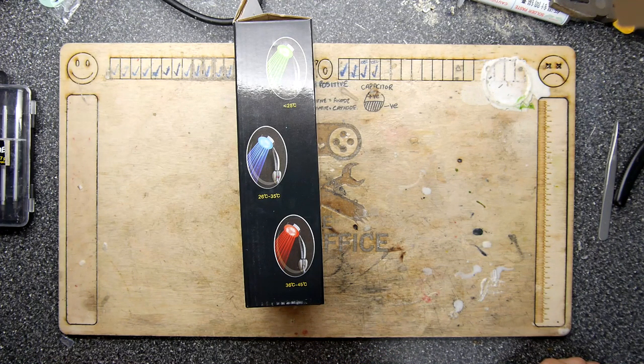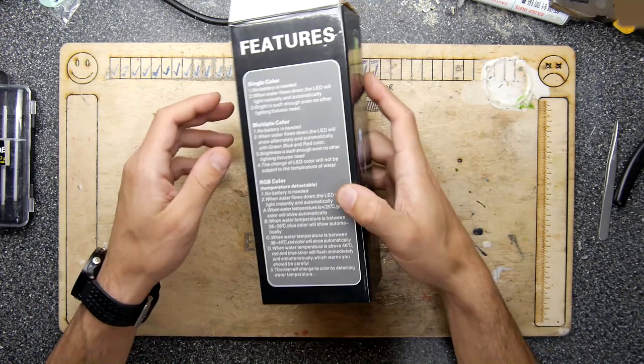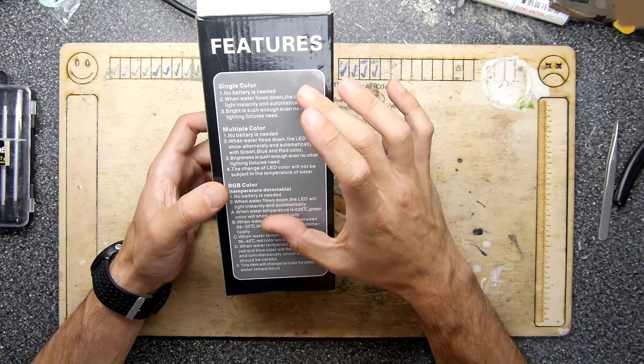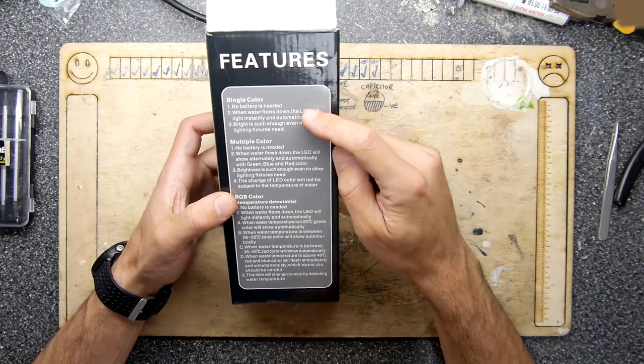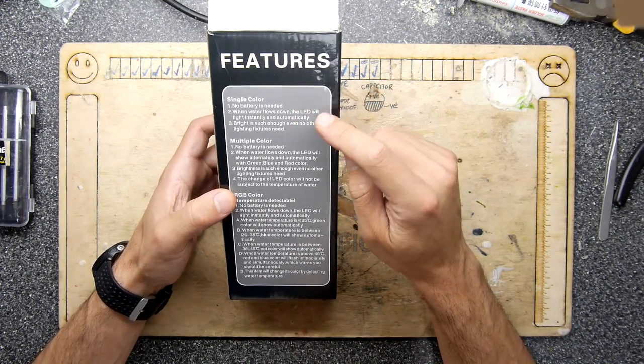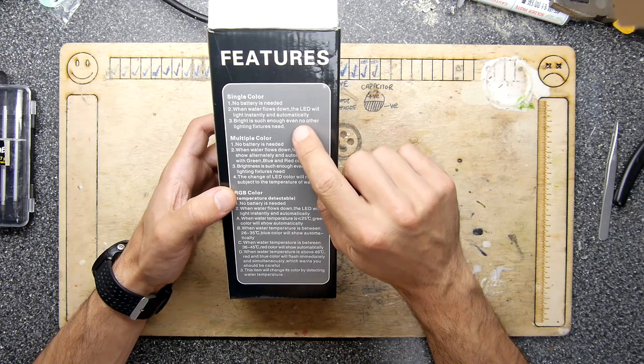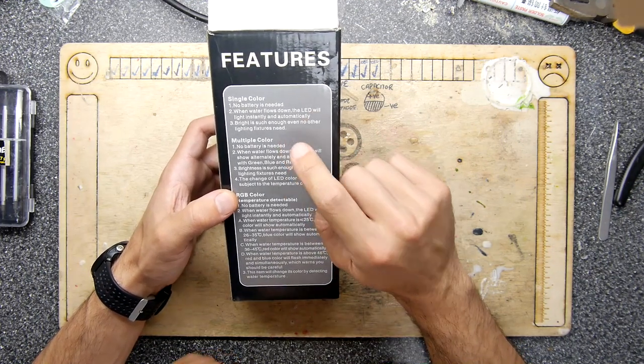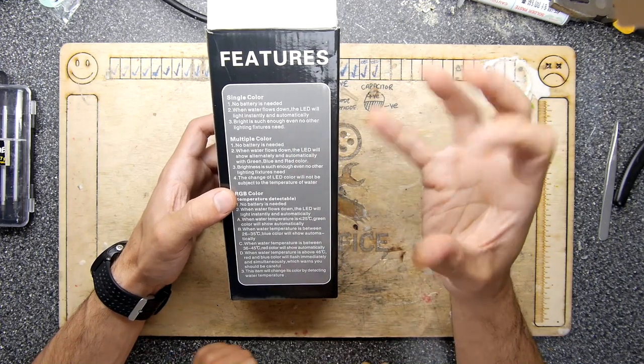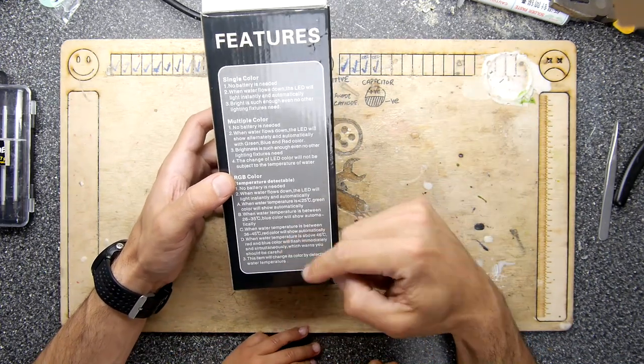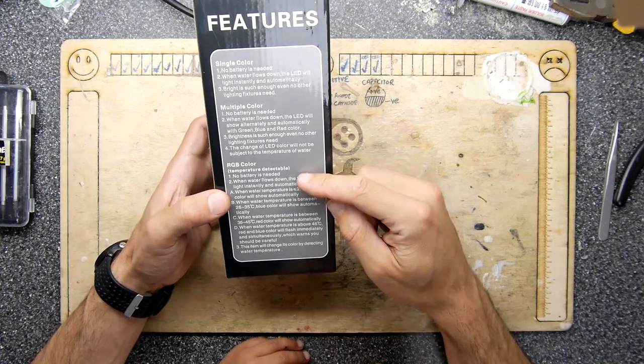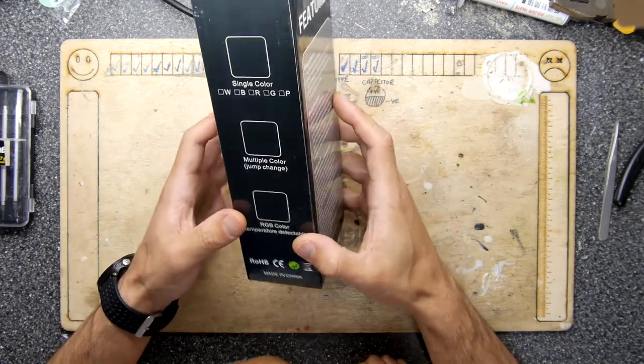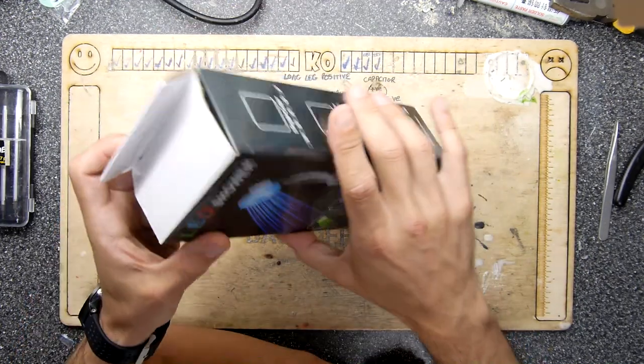There's different features depending on the different ones you have. There's a single color one that says no battery needed, it just shines one LED. Multiple colors, no battery needed, it just flashes red, green, and blue. And this one here is the RGB color which does a bunch of different things depending on the temperature.